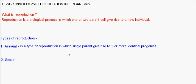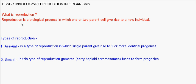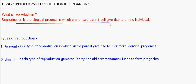Reproduction in Organisms. What is reproduction? Reproduction is a biological process in which one or two parents give rise to two or more individuals.